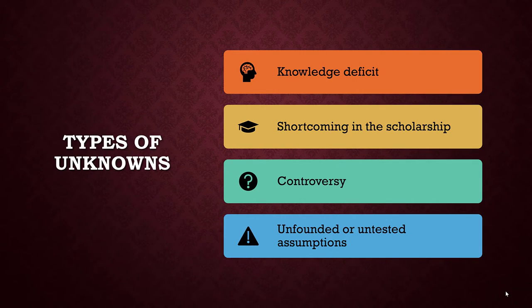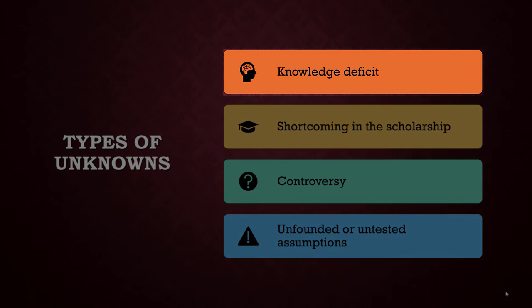Before moving on, it's important to realize that there are many types of unknowns. The simplest, for instance, is a knowledge deficit. In other words, no one has looked at the problem identified in the literature review.